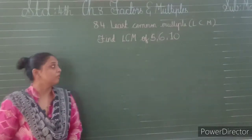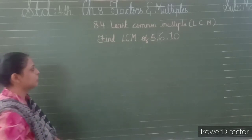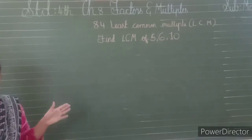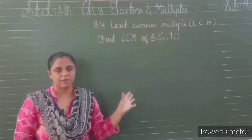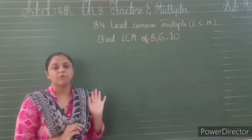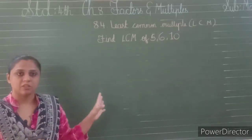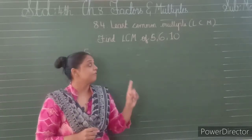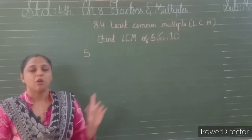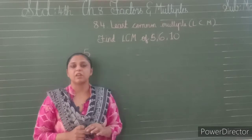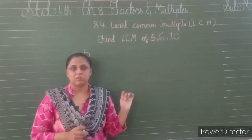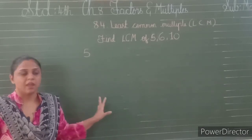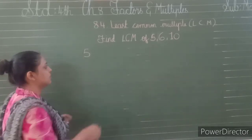Now let us perform another sum. Find out the LCM of 5, 6, and 10. First of all, we have to find out the multiples of 5, then the multiples of 6, and then the multiples of 10. After finding out all three numbers' multiples, we find out the common multiples. From the common multiples, the smallest number will be our LCM. Let us start.